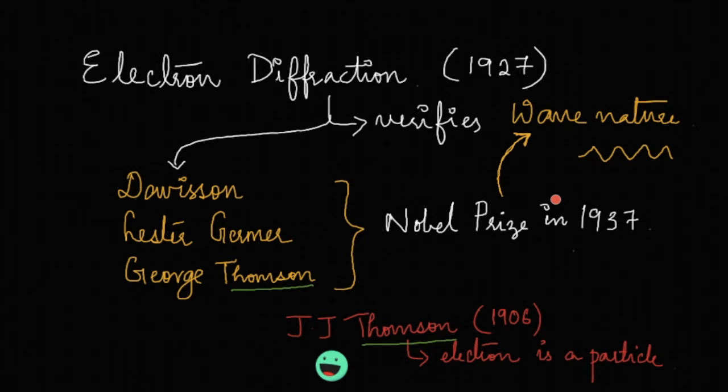Here's a funny story to relate with. You must be familiar with the name JJ Thompson who in 1906 identified electron as a particle and was awarded the Nobel Prize. In 1937 his son George Thompson was awarded the same for proving that electrons are waves. You have to understand that both father and son were correct because of wave-particle duality.